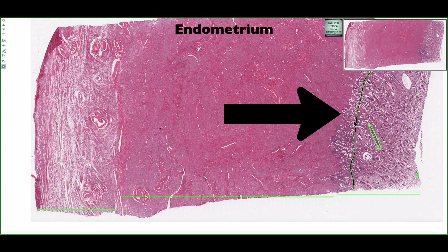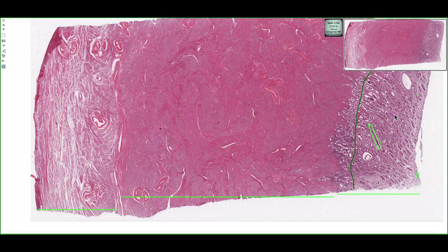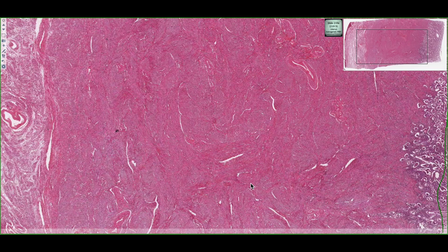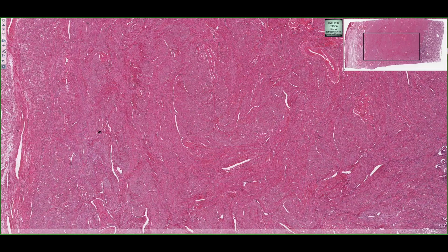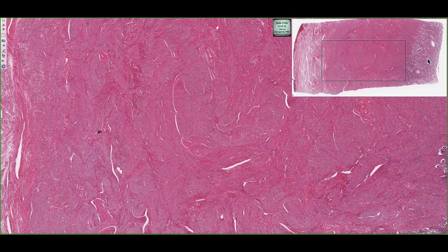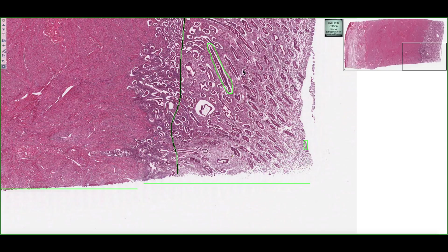Finally, we have the endometrium. The endometrium is going to be sloughed off during menstruation. If we look at it in particular, we can see it's subdivided into two specific areas.